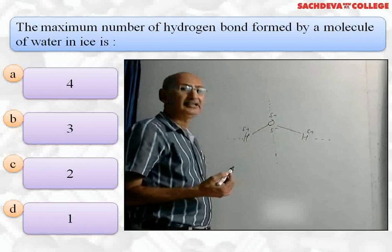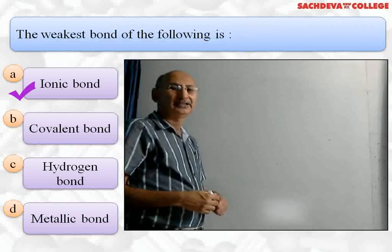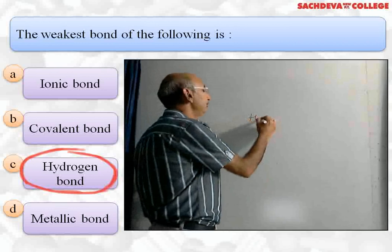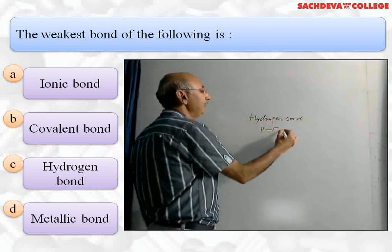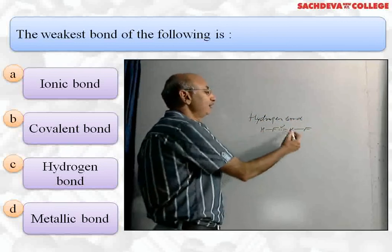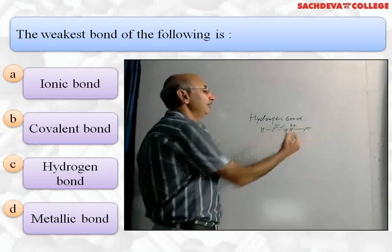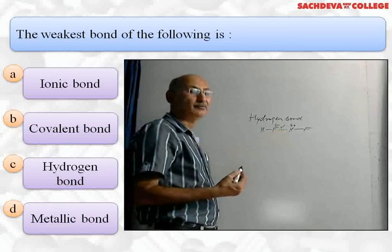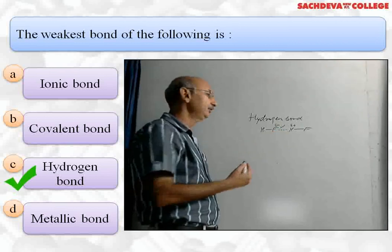Next question: which is the weakest bond among (a) ionic bond, (b) covalent bond, (c) hydrogen bond, or (d) metallic bond? The correct answer is (c) hydrogen bond. The hydrogen bond is a force of attraction between an electronegative atom — like fluorine, oxygen, or nitrogen — and a hydrogen atom of another molecule. It does not involve sharing of electrons and is comparatively weak. Ionic and covalent bonds are quite strong, and metallic bond strength varies. So the correct answer is (c) hydrogen bond.